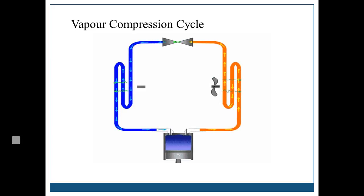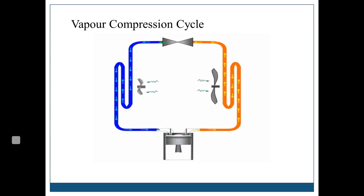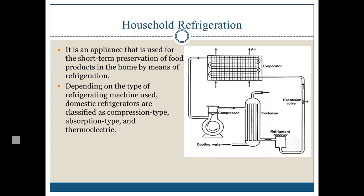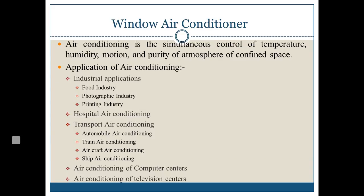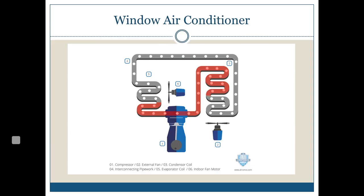The coefficient of performance (COP) for this cycle is the desired effect divided by the work supplied. We supply work to the compressor — that is our input. The output is the cooling effect in the evaporator. So COP equals heat absorbed divided by W. The same previous diagrams apply for the household refrigerator. The window air conditioner also works on the same VCR — vapor compression refrigeration — cycle.